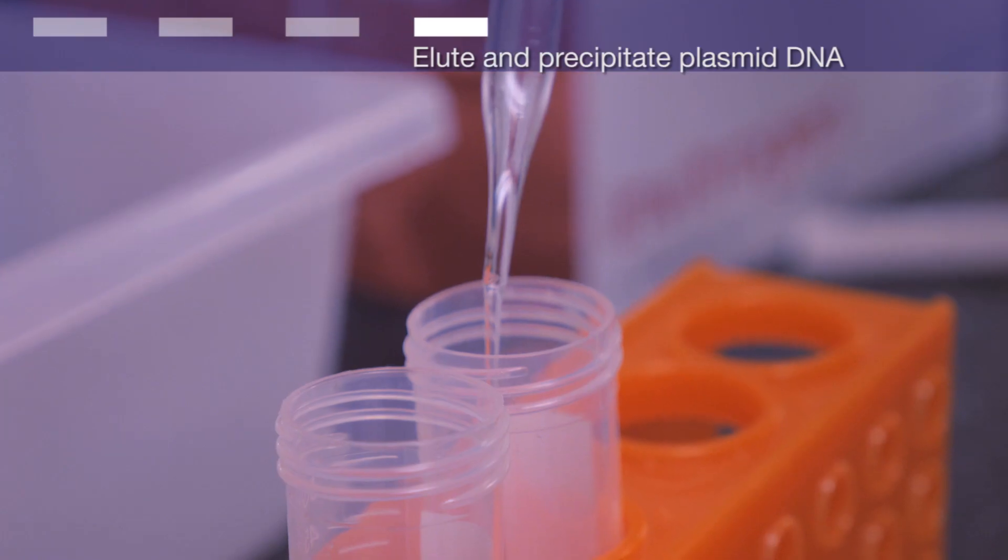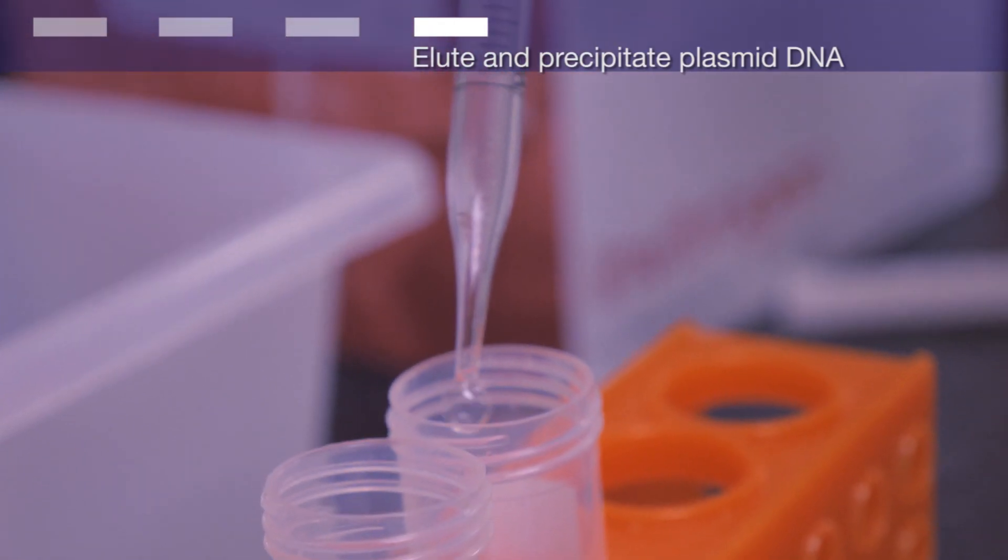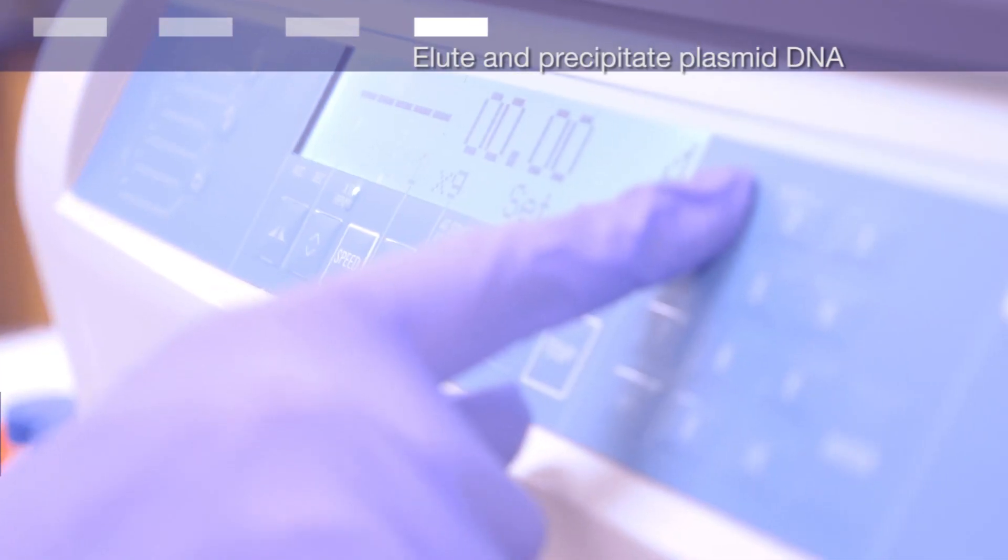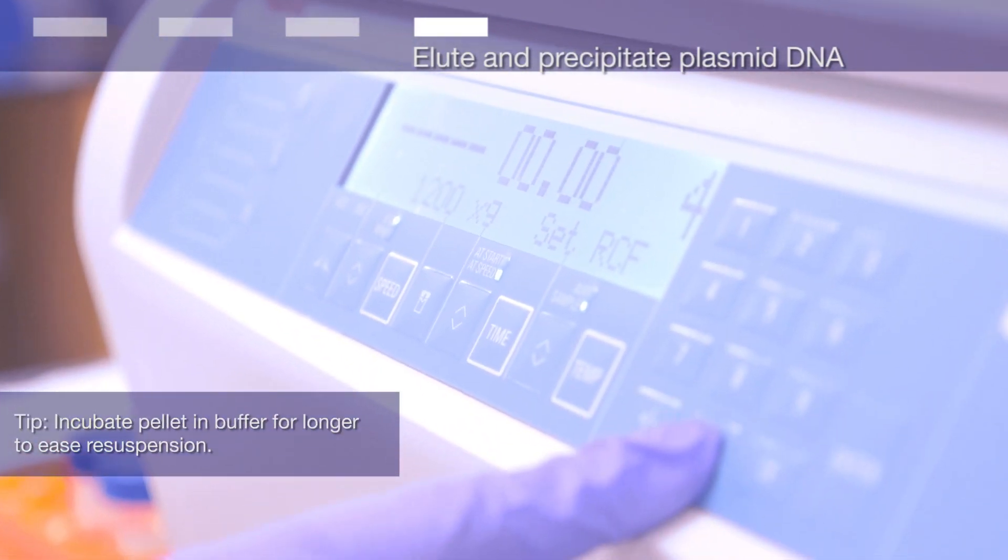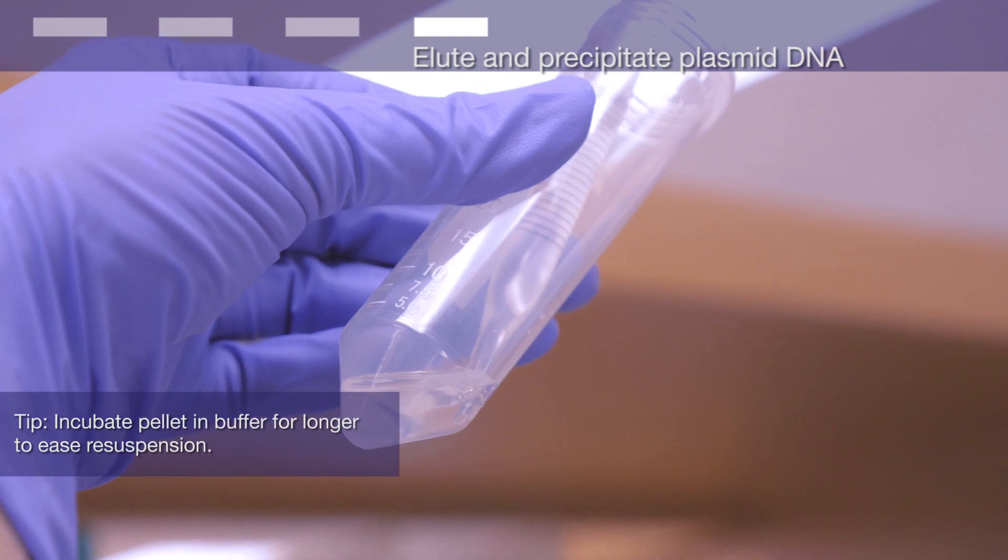Wash the DNA pellet with 5 milliliters of 70% ethanol. Centrifuge at greater than 12,000 times G for 10 minutes at 4 degrees. Remove the supernatant.